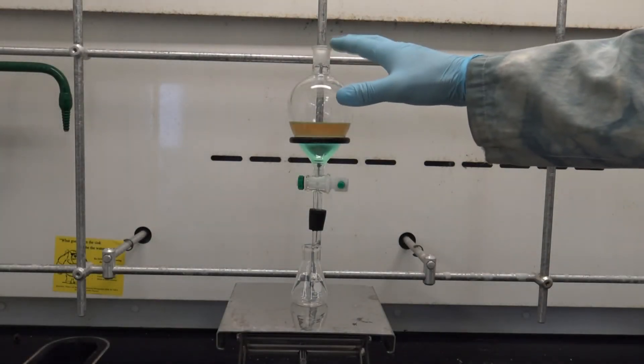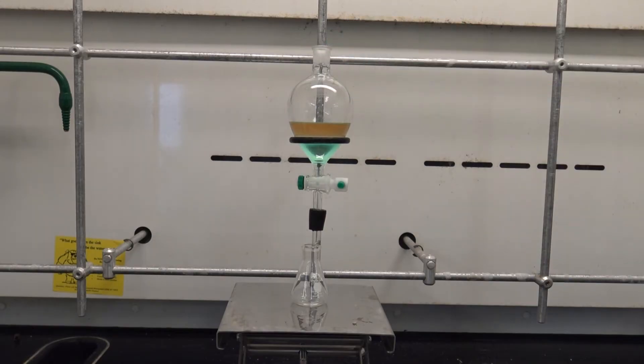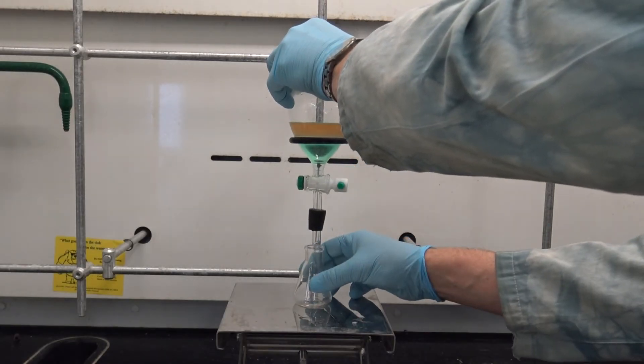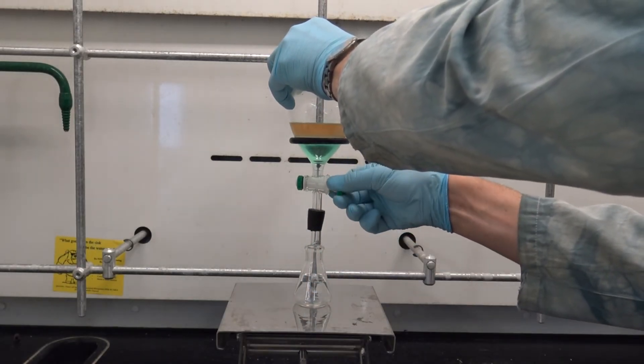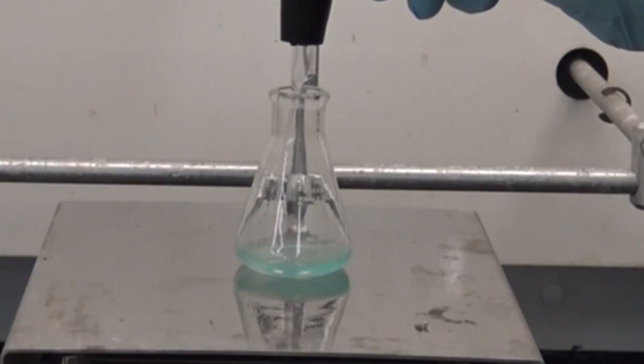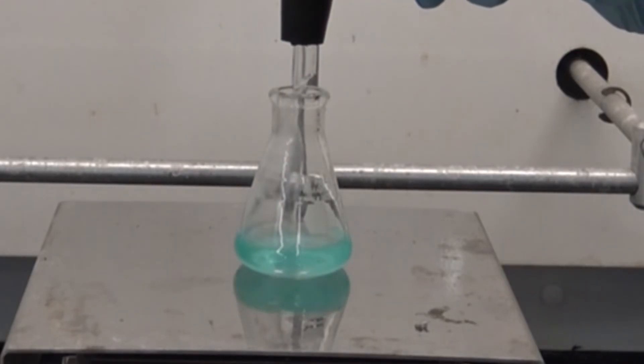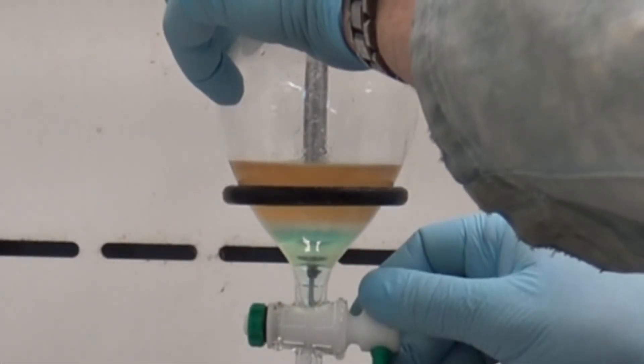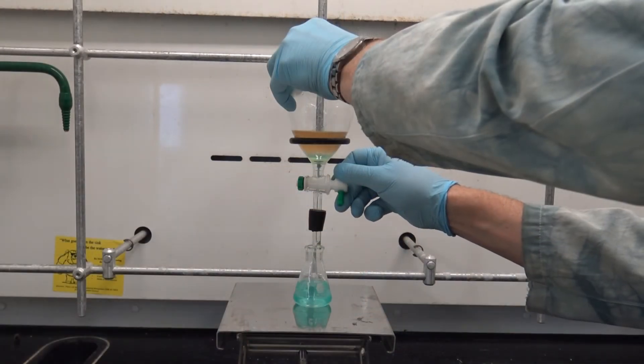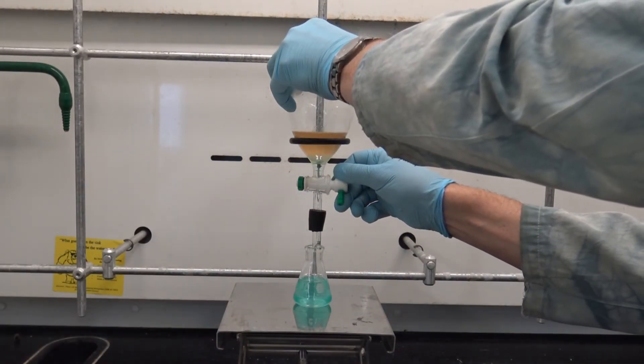Now I'm going to remove that ground glass stopper from the top of my separatory funnel so that liquid can flow out without there being a vacuum forming in the headspace. And placing a suitable collection vessel below, here I'm using an Erlenmeyer flask, I'll open my stopcock carefully. And notice that the solution that drains out from below, of course, is the more dense water that contains only the blue dye. I'll watch carefully, ensuring that just as that thin layer of emulsion in the middle reaches my stopcock, I close it.